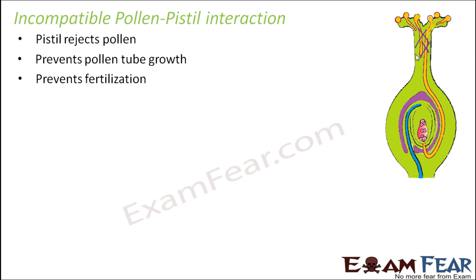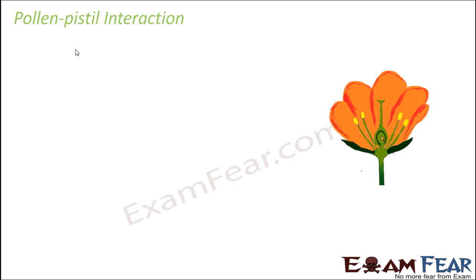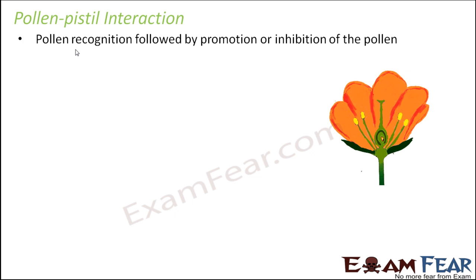The most important question is: the pistil either accepts or rejects the pollen, but based on what? How does the communication exchange take place between the pistil and the pollen? They cannot speak like humans do. So pollen-pistil interaction involves pollen recognition followed by promotion or inhibition of the pollen. The pollen comes to the stigma, is recognized, and then either accepted — promotion — or rejected — inhibition. That is where the pollen-pistil interaction story starts.